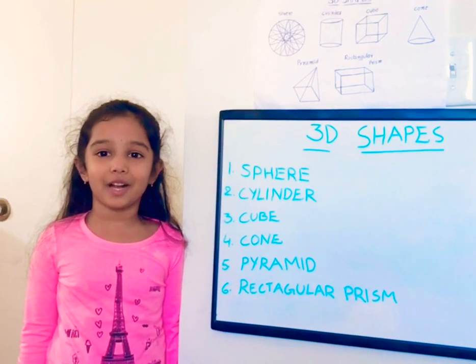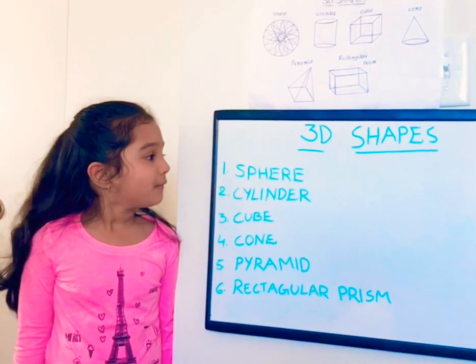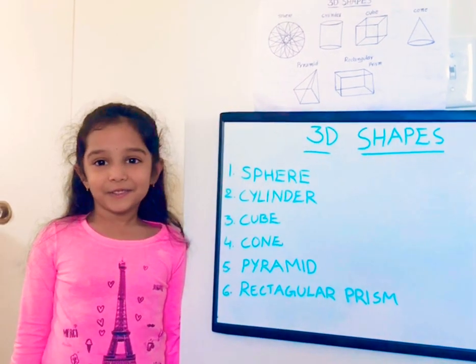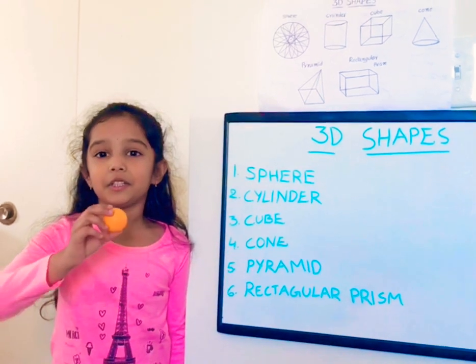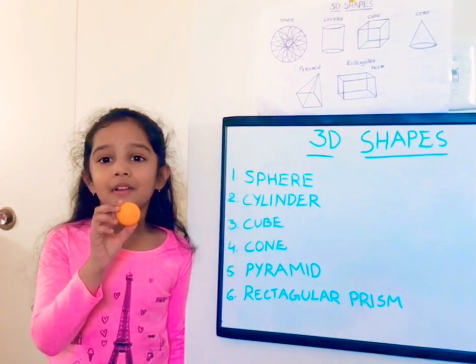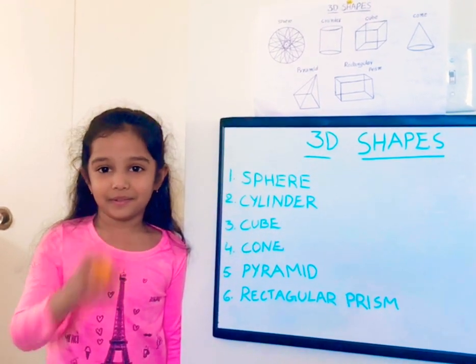Now let's talk about 3D shapes. First is sphere. The 3D shape of a circle is called a sphere.